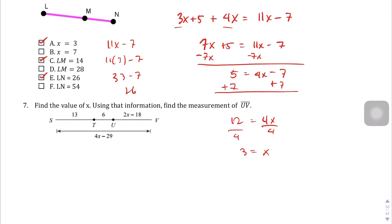Question number 7. Find the value of X using the information finding measure of UV, segment UV. So we were told these three segments are going to equal this longer 4X minus 29. So let's do that. 13 plus 6 plus 2X minus 18, which is this plus this plus this, is going to equal the bigger 4X minus 29. So let's combine my terms. That's 19 minus 18, you're going to get 2X plus 1 equals 4X minus 29.